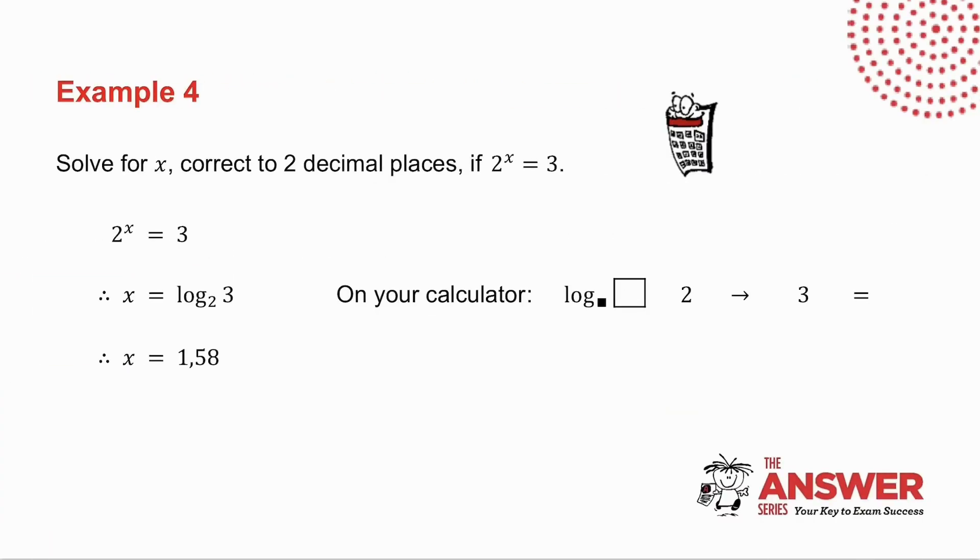In example number 4, I ask you to solve for x, correct to two decimal places. So that tells you you're going to have to use a calculator for it. So I take 2 to the x equals 3, and I change it into log form. Then on my calculator, I press the button, log with a little square and then the big square, 2 for the base, right arrow to move across, 3 for the number, equals. And I get that x is equal to 1.58.